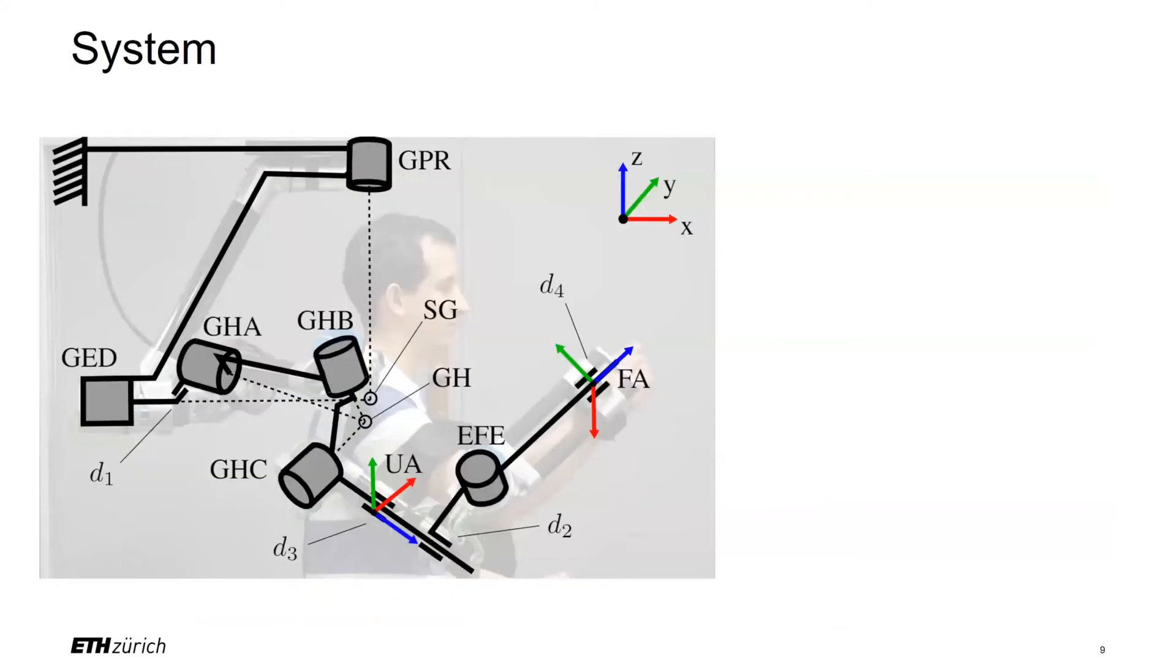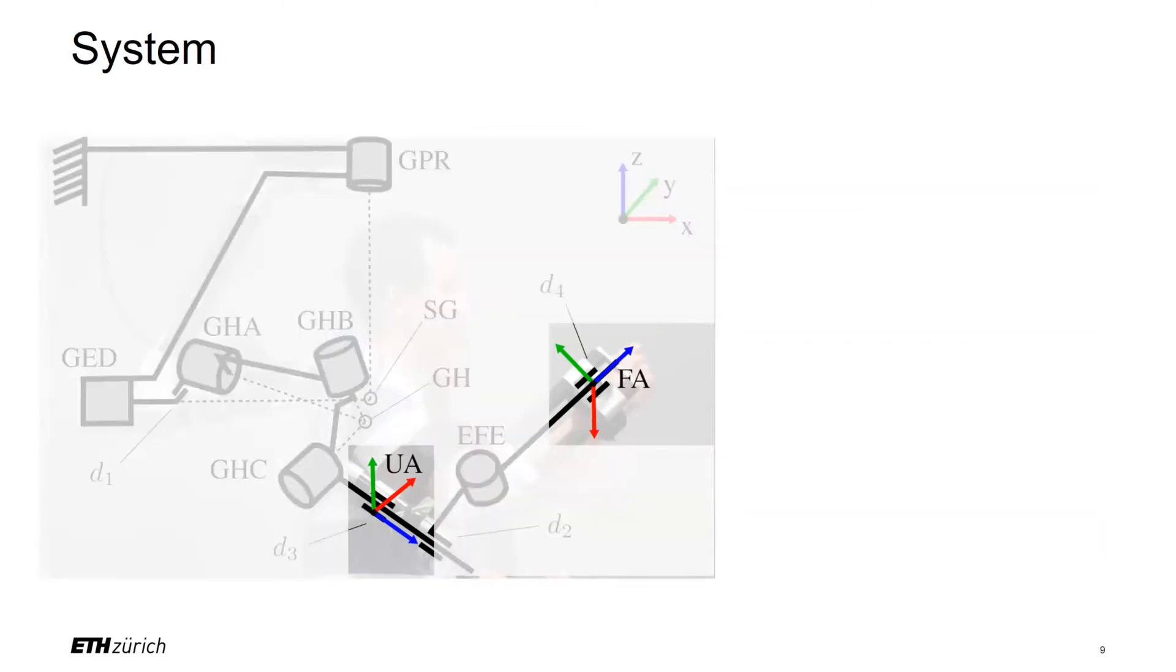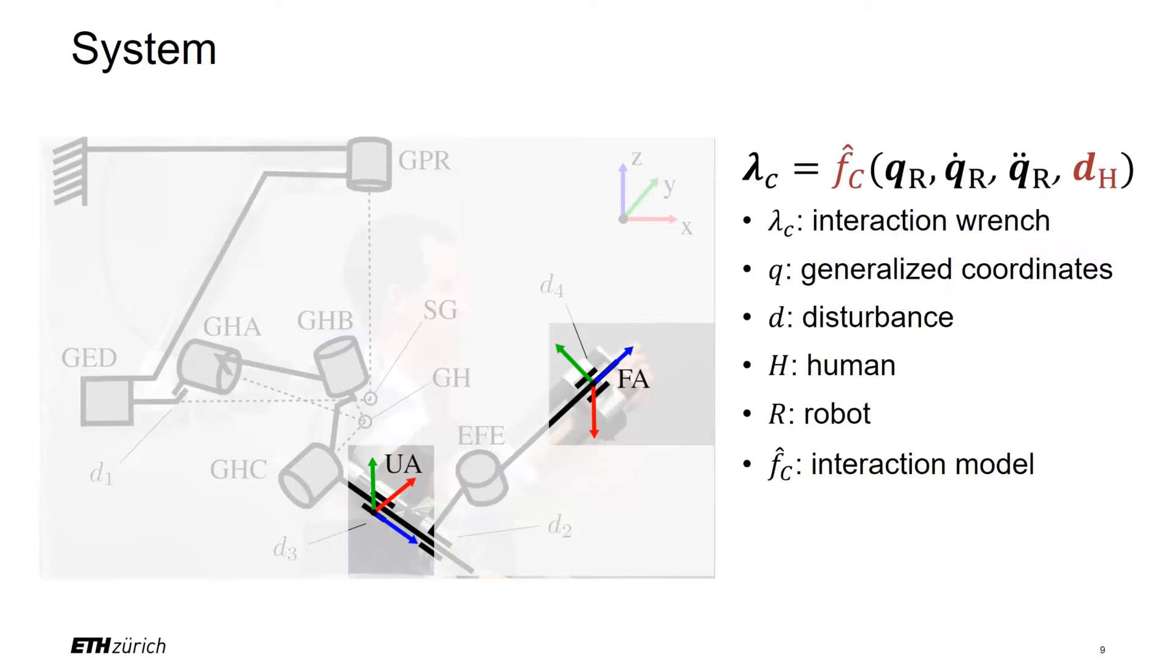The exoskeleton that we used for the experiments has two contact points with the human, one at the upper arm and one at the forearm. At each contact point, the interaction forces can be modeled as a function of the robot state and the human state. As the human state is not measured, we model it as disturbance. F_C can be an arbitrary complex model of the interaction force dynamics. A common approach is to model it as a spring damper system. In the following, we will denote F_C and the human state as the environment.